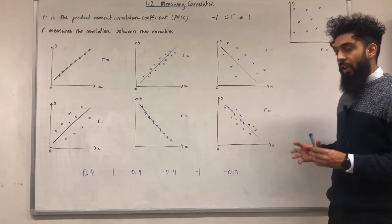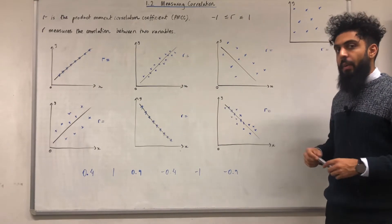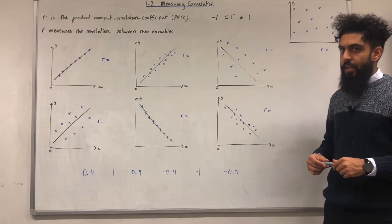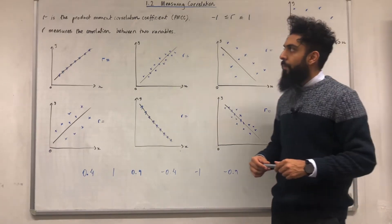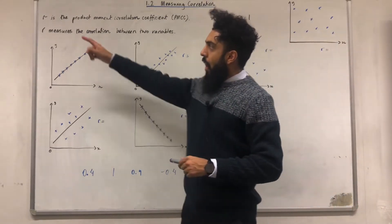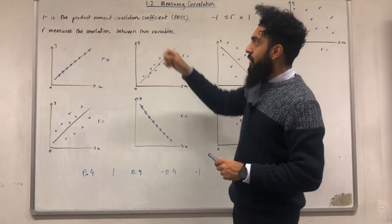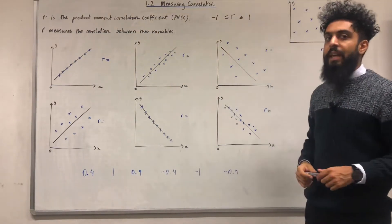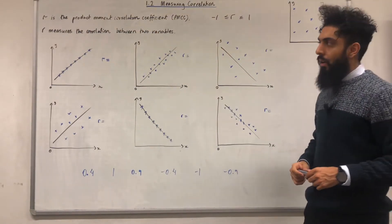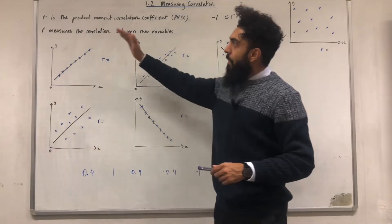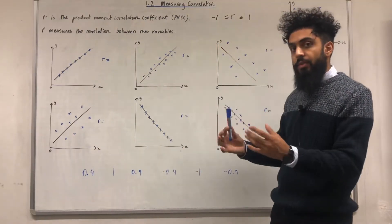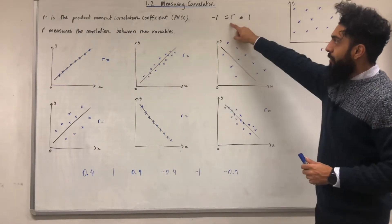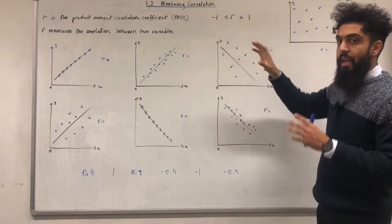I'm going to start off this teaching video by explaining what the product moment correlation coefficient is. R is the product moment correlation coefficient, in shorthand PMCC. R measures the correlation between two variables. R is between minus 1 and 1, inclusive.